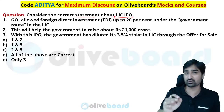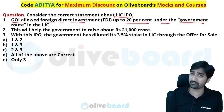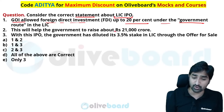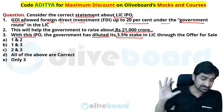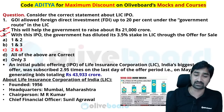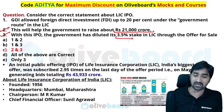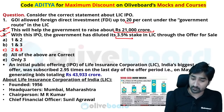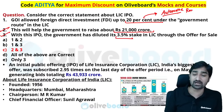Consider the correct statement about the LIC IPO which was in the news recently. Point one: the government allowed Foreign Direct Investment up to 20% under the government route for LIC. It will help the government to raise approximately 21,000 crore rupees from the market. With this IPO, the government diluted approximately 3.5% stake in LIC through the offer for sale.